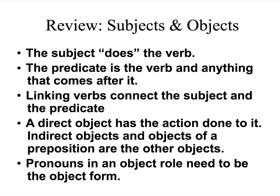Just to review: the subject is who or what does the verb. The predicate is the verb and anything after it. A linking verb connects that subject with something in the predicate, giving you more information about the subject. The direct object has the action done to it. Indirect objects and objects of the preposition are different kinds of objects you will encounter. They all need object pronouns — if you've got a pronoun in an object position, it needs to be the object form of that pronoun.